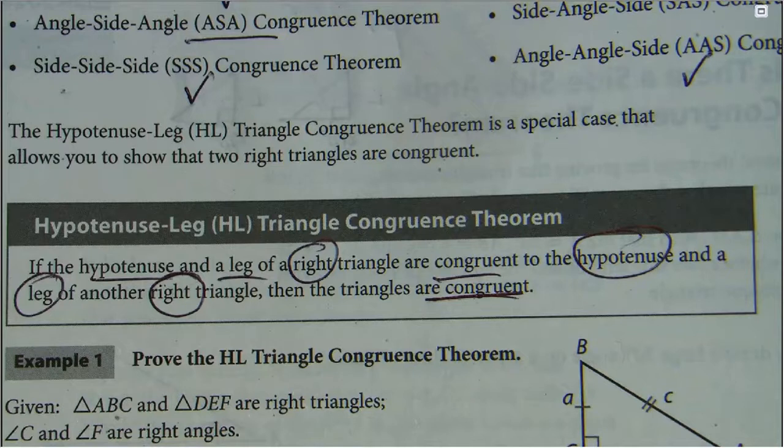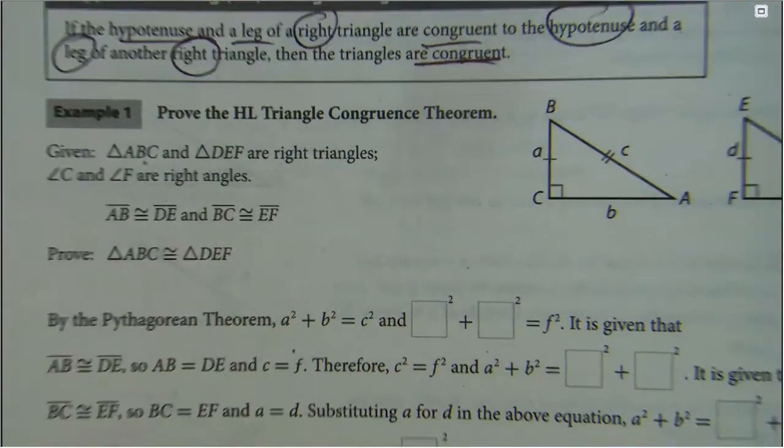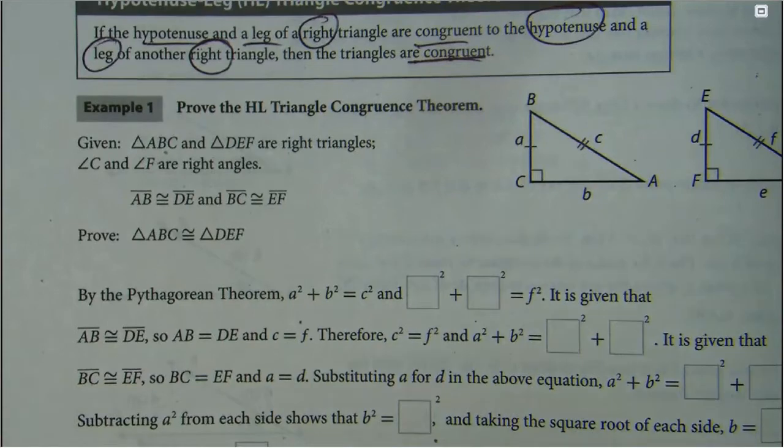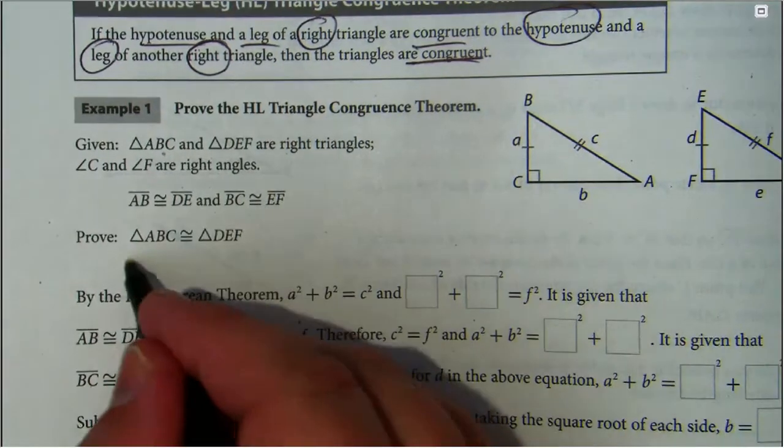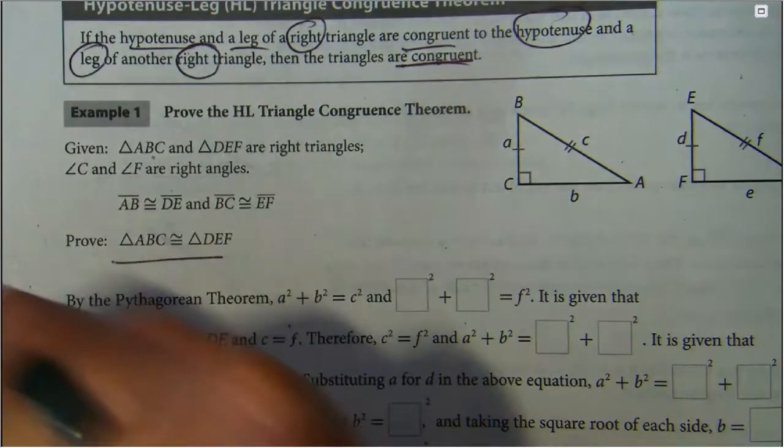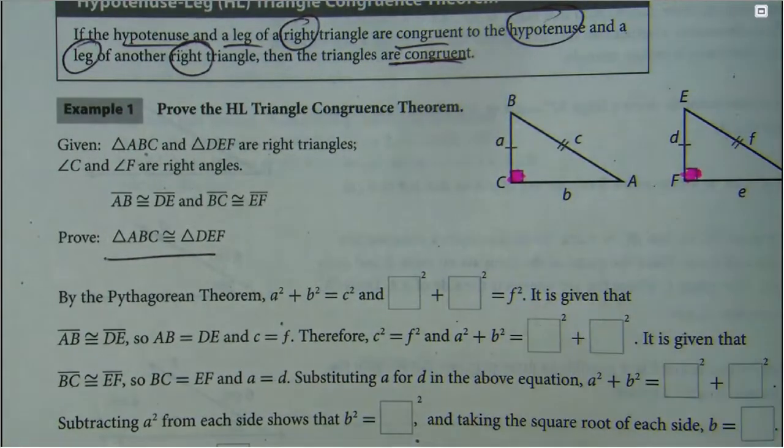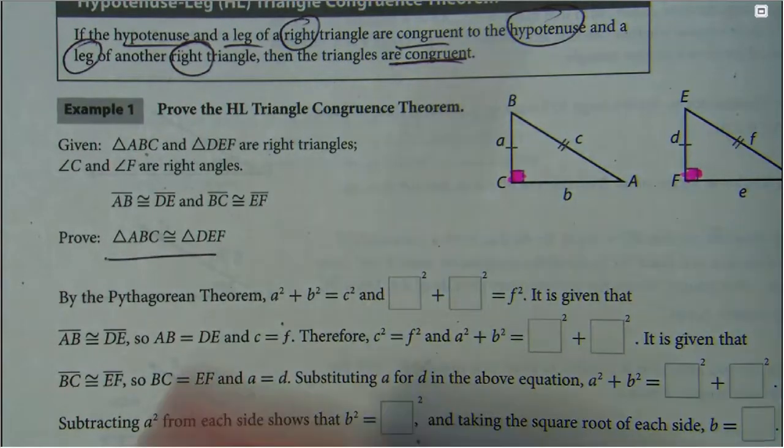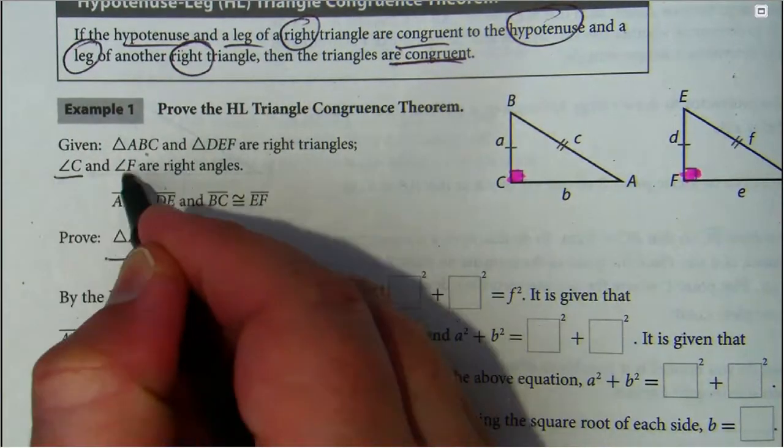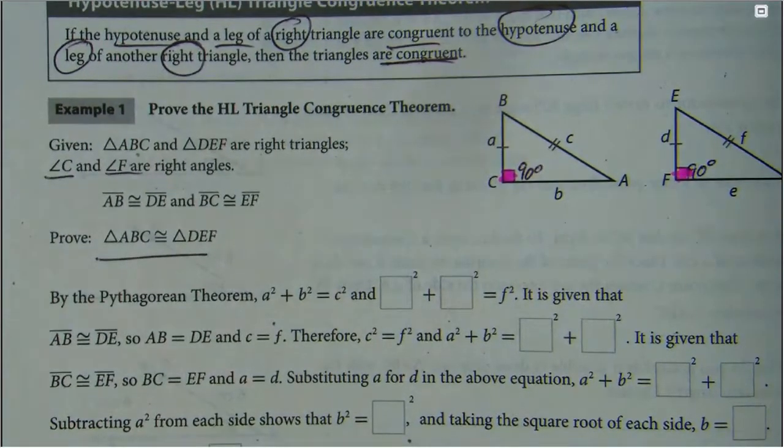We are going to dive into a couple proofs just to play it safe. If we look at this example one, we got to prove that these two triangles are congruent. Where do I start? Givens. So they say these are right triangles. What does that give us? It gives us an angle, the 90 degree angles. And they also make it more abundantly clear when they say angle C and angle F are right angles.